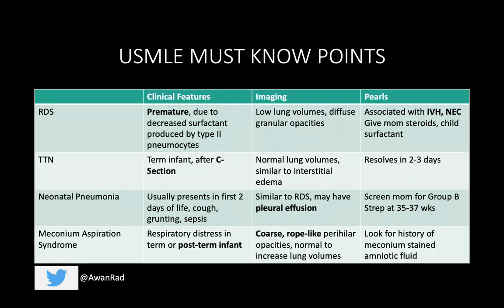Here are the must-know USMLE points. For RDS, you're looking for a premature infant with decreased surfactant produced by type two pneumocytes. On chest x-ray look for low lung volumes and diffuse granular opacities. Importantly, because these are preemies, there is a high association with intraventricular hemorrhage and necrotizing enterocolitis. Patients with RDS have a higher association with developing intraventricular hemorrhage and necrotizing enterocolitis. Make sure to give the mom steroids and the child exogenous surfactant.